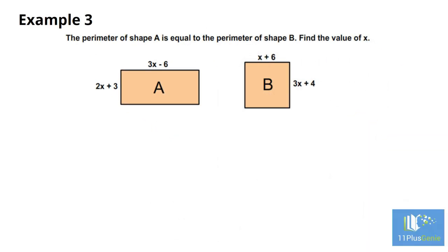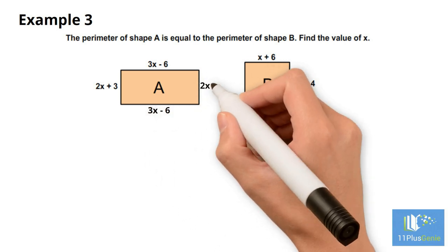Example 3. The perimeter of shape A is equal to the perimeter of shape B. Find the value of x. We recommend that you first fill in the length of all the sides.